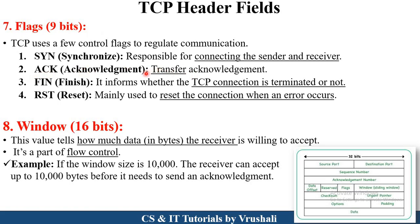The next flag is acknowledgement (ACK) — the receiver sends an acknowledgement to the sender confirming that particular information was received correctly. The next flag is finish (FIN), which indicates whether a TCP connection is terminated or not terminated. The last one is reset (RST) — reset flag is mainly used to reset the connection when errors occur. If the receiver didn't receive an appropriate message, the sender resends it, and at that time the reset flag is used.